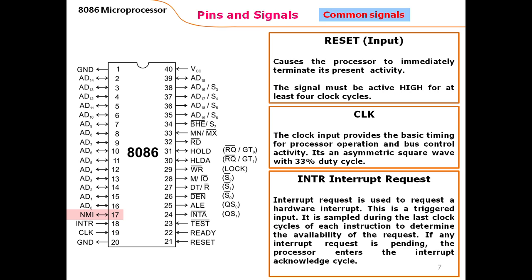NMI is also an interrupt pin, but it is a Non-Maskable Interrupt. Both INTR and NMI are hardware interrupt pins, but the key difference is that the INTR pin can be disabled using the CLI (clear interrupt) assembly language instruction, which clears the interrupt flag in the flag register. When interrupts are disabled, any interrupt received through INTR (pin 18) is ignored. However, NMI cannot be disabled — it cannot be controlled by the interrupt flag in the flag register.